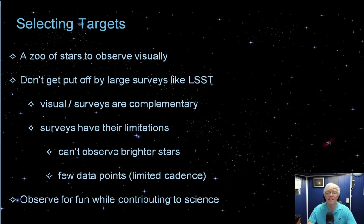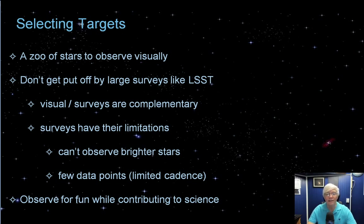Some observers thought these large surveys would spell the end for visual variable star observers — nothing is further from the truth. These surveys do have limitations: they can't observe brighter stars, and they can't observe any particular star with sufficient frequency. Remember, it's every three days, whereas the visual astronomer can observe the same star a few times in a night or a few times in a week. So they complement each other. Just make sure you are observing for fun, knowing that you're contributing to science.